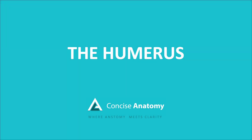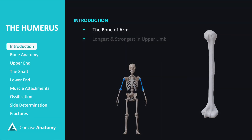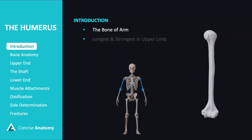Today we're exploring the humerus, the upper arm bone that bridges the shoulder and elbow. The humerus is the bone of the arm, the longest and strongest bone in the upper limb.